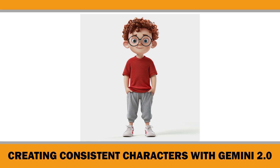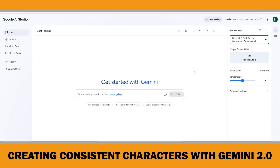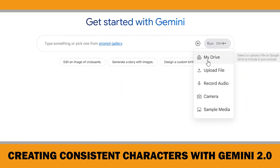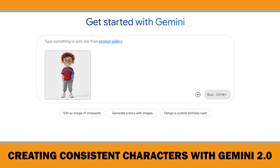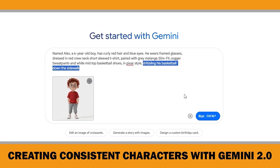This was the character image I created in Midjourney in my last video. His name is Alex, and here's the prompt I used to generate this image. Now I am going to upload this image into Gemini and write the exact same prompt that I used in Midjourney. You can start your prompt with something like 'use this image as a character reference,' but honestly based on my previous tests, it's not even necessary for Gemini to understand and match the character well. So let's just copy our first prompt — Alex dribbling his basketball down the sidewalk — paste it in and click Run.